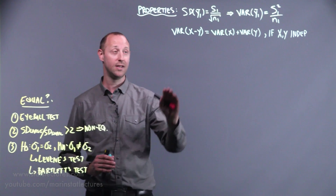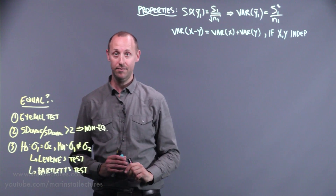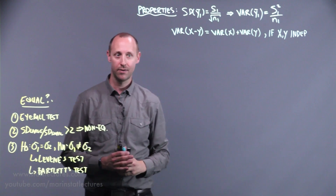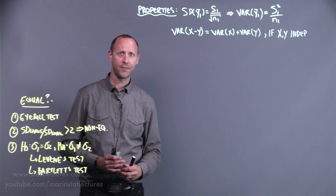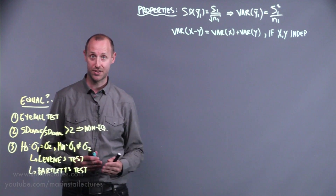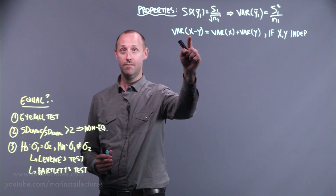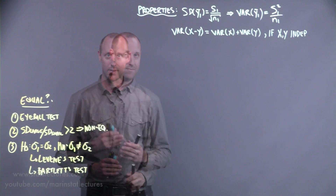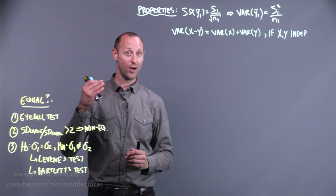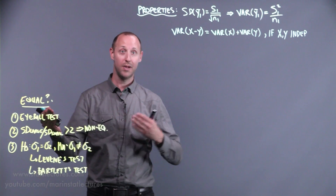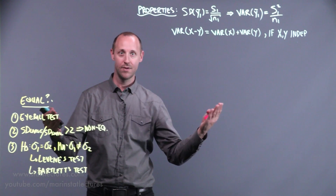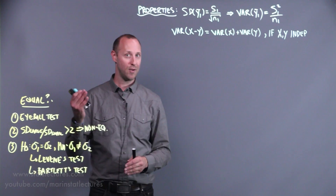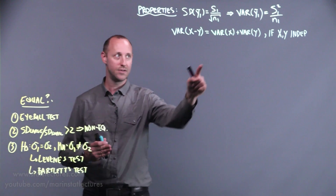Conceptually, when we compute the variance of X minus Y, we capture the variability in both X and Y. Consider a company's profits, which equal revenue minus expenses. The variability of overall profit depends on how variable the money coming in is, plus how variable the money going out is — it's the combination of those two.